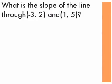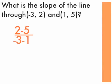The first example asks: what is the slope of the line through (-3, 2) and (1, 5)? There are two valid ways to plug these values into y sub 2 minus y sub 1 over x sub 2 minus x sub 1. One way is to have 2 minus 5 over negative 3 minus 1, where 2 and negative 3 both come from one ordered pair and 5 and 1 come from the other.